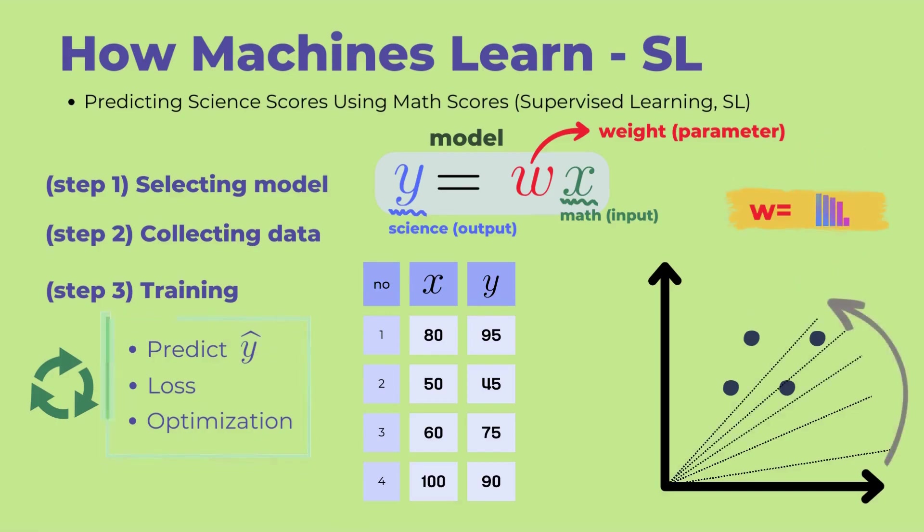We repeat these three stages of training, calculating predictions, calculating loss, and performing optimization. The value of W is gradually updated to reduce the loss. As shown in the graph on the right, the model gets closer to the densely populated area of the data. At some point, the loss will no longer decrease. When the loss no longer decreases, we stop training. In this example, we stop training when the value of W reached 1.2. Looking at the graph on the right, it appears that the model has converged well to the densely populated area.